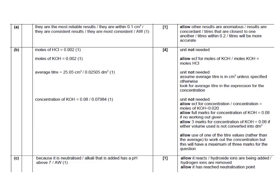Here are the full mark scheme answers. For why those two titrations were chosen: they are the most reliable, consistent, or concordant results; the others were anomalous. The calculation carried four marks: one for moles of HCl = 0.002; one for moles of KOH = 0.002 (1:1 ratio); one for the average titre in cm³ or dm³; and one for the concentration of KOH — either 0.07984 mol/dm³ or to one significant figure: 0.08 mol/dm³. The pH rose because the acid was being neutralised, or because the added alkali has a pH above 7.